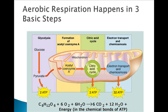Aerobic respiration happens in three basic simple steps. The first step is glycolysis, which happens in the cytoplasm — it's the breakdown of glucose into two pyruvate molecules, and a small amount of ATP is generated: two of them.